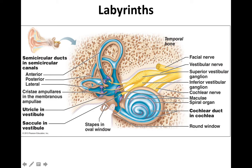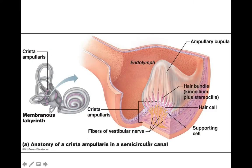Looking at the structure of the crista, it's very similar to what we've seen in the vestibule and cochlea: supporting cells alongside hair cells, with fibers of the vestibular nerve wrapped around their bases. Out of the hair cells project kinocilia and stereocilia, which are embedded in a mucus-like membrane called the cupula. Endolymph passes back and forth through the semicircular ducts across this entire structure, initiating movement of the cupula.